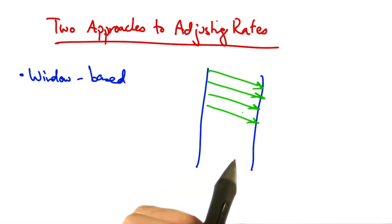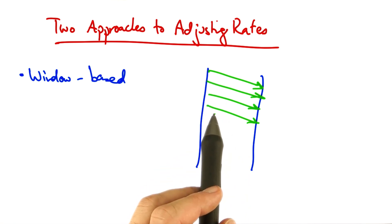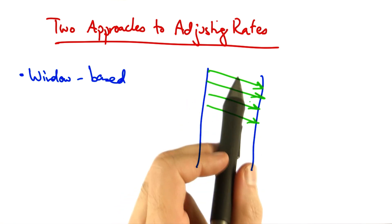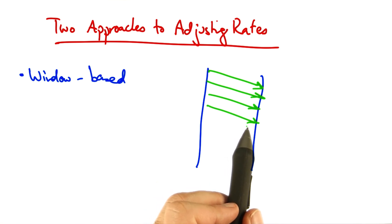And the sender uses acknowledgments from the receiver to clock the retransmission of new data. So let's suppose that the sender's window was four packets. At this point, there are four packets outstanding in the network, and the sender cannot send additional packets until it has received an acknowledgment from the receiver.